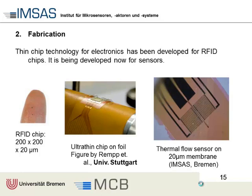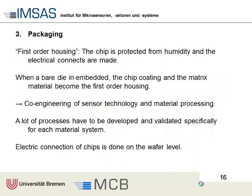That's an ultra-thin chip on foil made by University of Stuttgart, and a thermal flow sensor on a polyimide membrane made by our cleanroom. An interesting thing you can see here - and this brings us to packaging - is the sensor is ultra-thin, but they still have bond pads. If you want to use an ultra-thin sensor, you have to think of other methods to bond it. This brings us to the third issue: packaging.